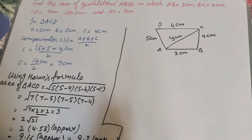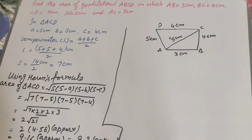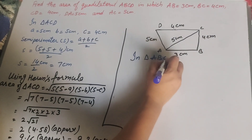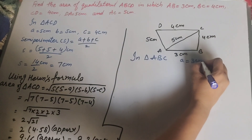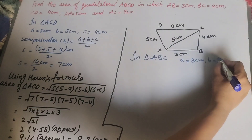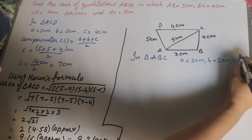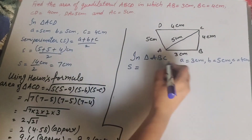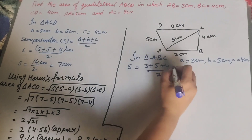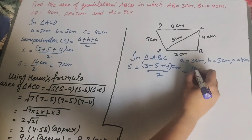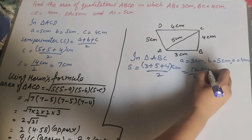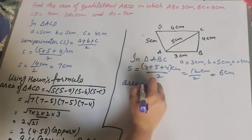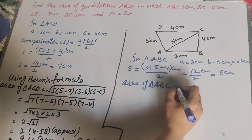Now we move to the second triangle ABC. In triangle ABC, side a equals 3 cm, side b equals 5 cm, and side c equals 4 cm. The semi-perimeter s = (3 + 5 + 4) / 2 = 12 / 2 = 6 cm.